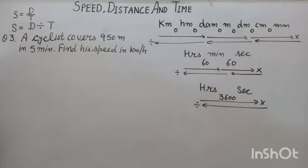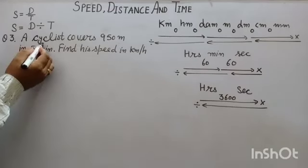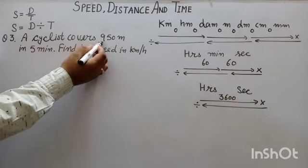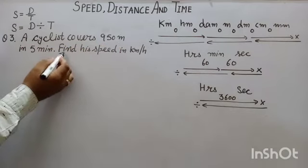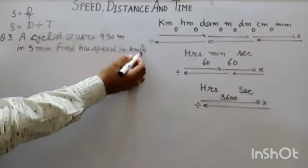Question number 3. A cyclist covers 950 meters in 5 minutes. Find his speed in km per hour.